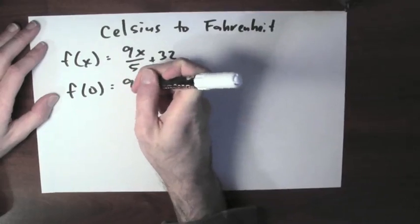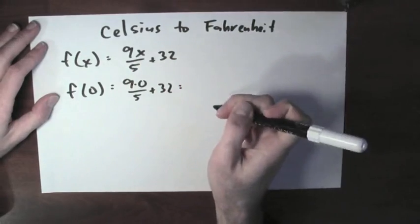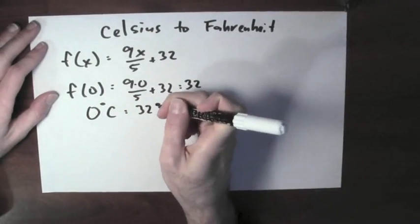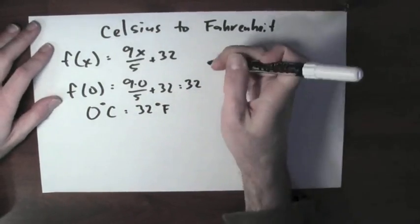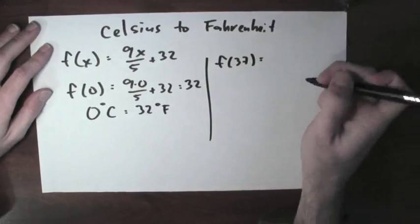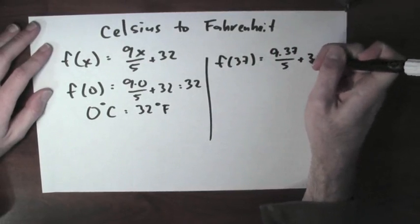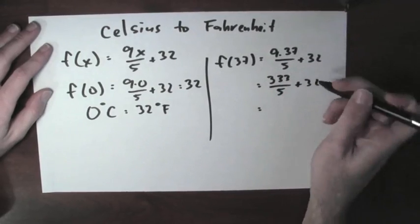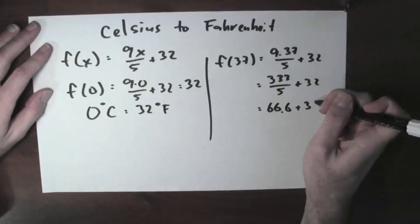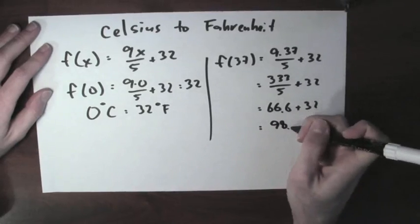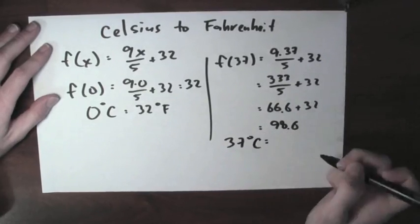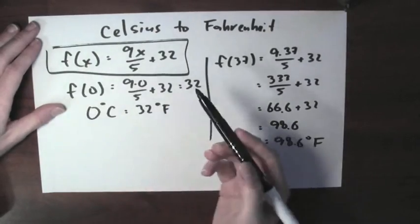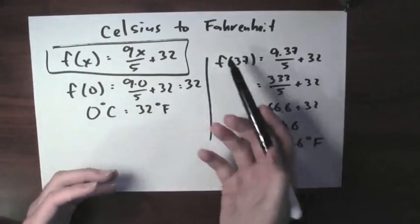What's f(0)? That's 9 times 0 over 5 plus 32, which is 0 plus 32, just 32. And of course, 0 degrees Celsius is the same as 32 degrees Fahrenheit. What's f(37)? That's 9 times 37 over 5 plus 32. 9 times 37 is 333, over 5 is 66.6, and 66.6 plus 32 is 98.6. Indeed, 37 degrees Celsius is 98.6 degrees Fahrenheit — the function takes in something in Celsius and outputs something in Fahrenheit.